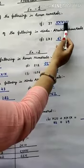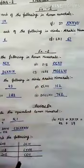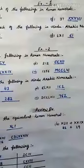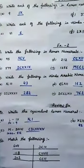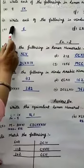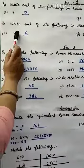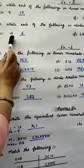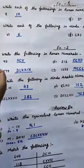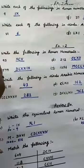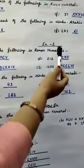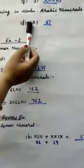So 37 is written as XXXVII. Next, Question 2: Write each of the following in Hindu-Arabic Numerals. This is VI — V means 5 and I means 1. When the number is on the right side, as I explained in the rules, it gets added to the larger Roman numeral. So this becomes 6.